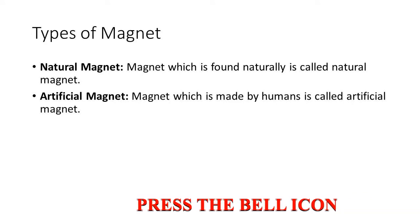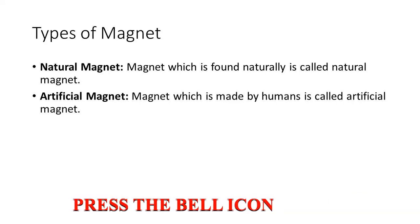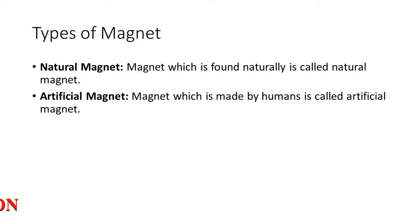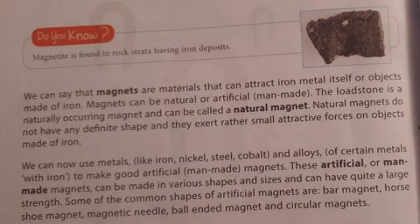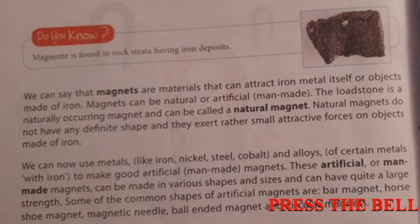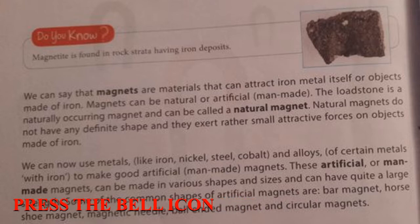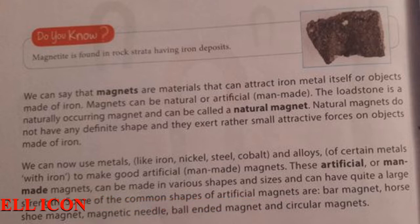There are two types of magnets. One is natural magnet and another is artificial magnet. Magnets which are found naturally are called natural magnets. Magnets which are made by man are called artificial magnets.